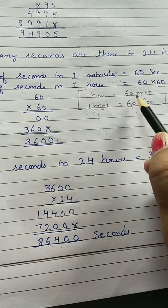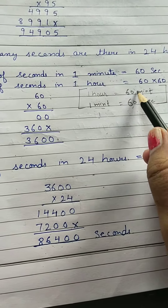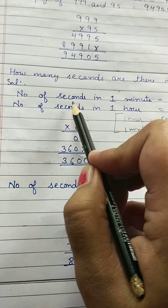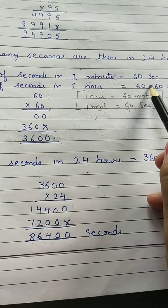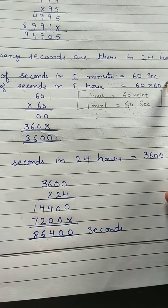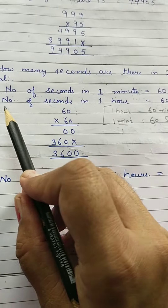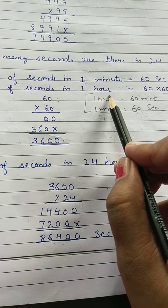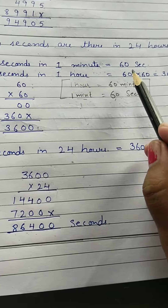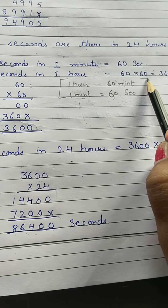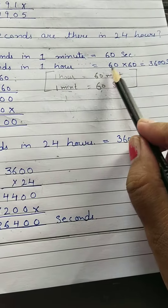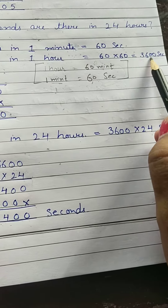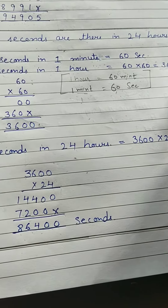We multiply these two: 60 minutes by the number of seconds in 1 minute, which is 60 seconds. Then the number of seconds in 1 hour is equal to 60 multiplied by 60, which gives us 3600 seconds.